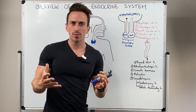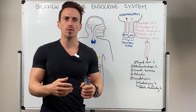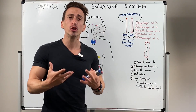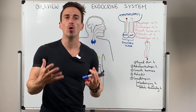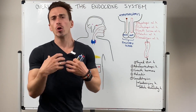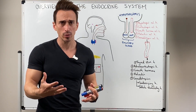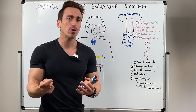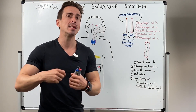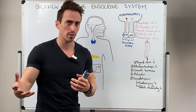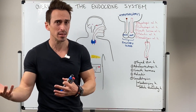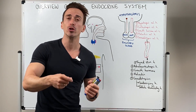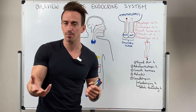The endocrine system is a collection of cells and glands that produce and release hormones. Hormones are just chemicals that jump into the bloodstream and can have their effect in quite distant areas of the body, at least distant in comparison to the tissues that produce and release them.